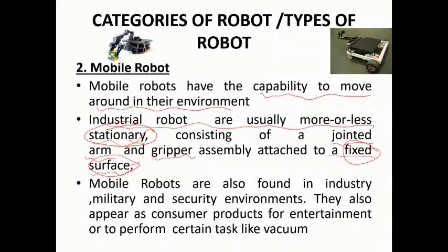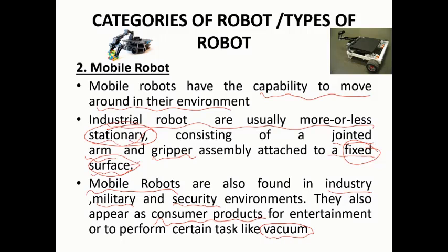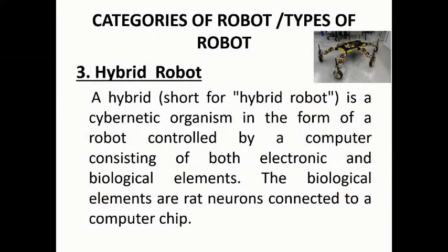Mobile robots are also found in the industrial domain, the military domain, and security domains. They also appear as consumer products — for example, the vacuum cleaner robot, which moves across the floor of your house cleaning all the dust. That's a good example of a mobile robot.